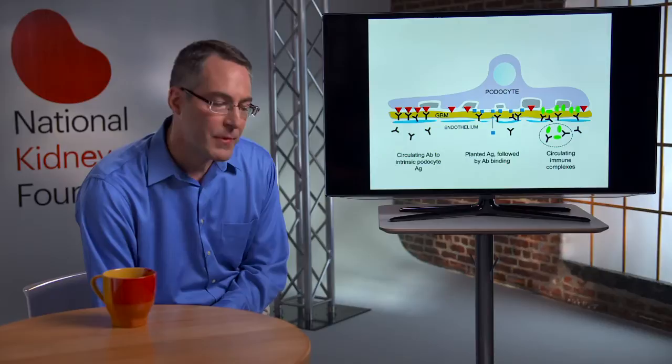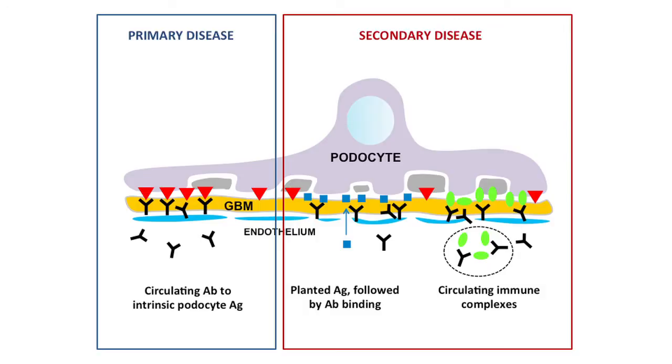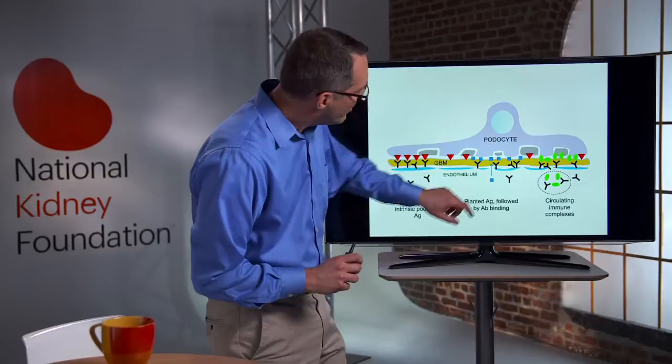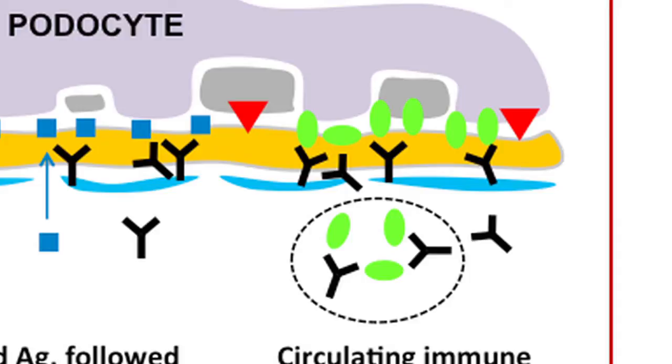How do these deposits form? The general principle is that antibodies in the bloodstream need to cross the GBM — the glomerular basement membrane — to target protein antigens present beneath the podocyte. Early views in the 1950s and 60s suggested that circulating immune complexes were responsible for many of these immune complex disorders in kidney disease. For that to happen, these large circulating complexes would need to bind on the capillary side, dissociate, cross the GBM, and reassociate on the podocyte side.